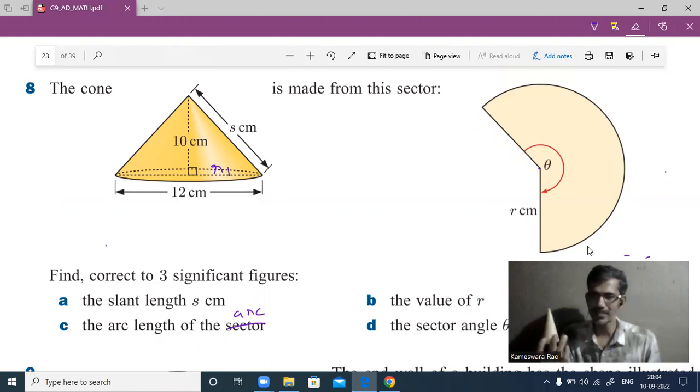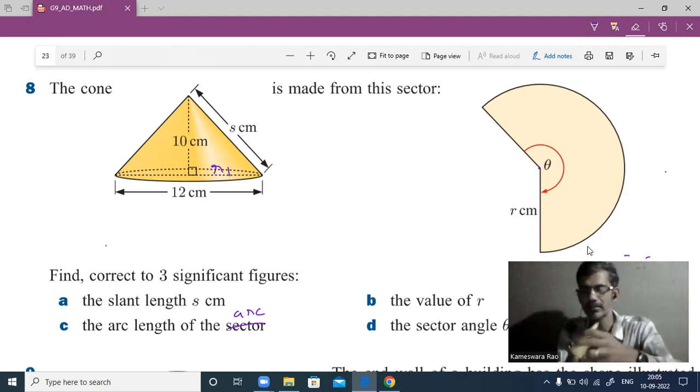The cone model is a unique three-dimensional figure which has one flat surface, one curved surface, and one vertex. I took a chart that completely surrounds the cone—this is the curved surface area of the cone.